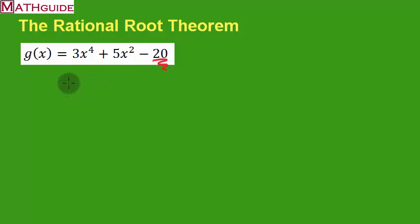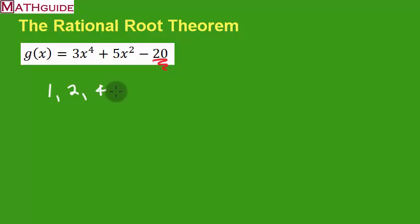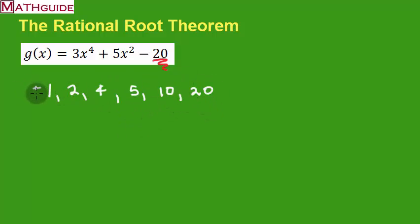The factors of 20 are 1, 2, 4, 5, 10, and 20. So all of these are factors, and positives and negatives we have to consider. So it looks like we've got a number of factors to consider.